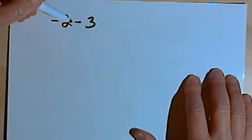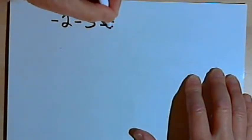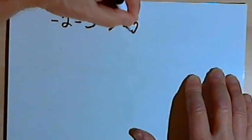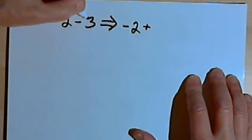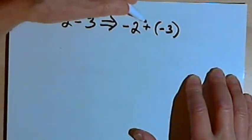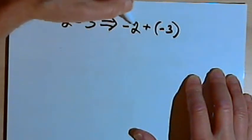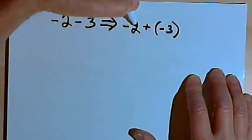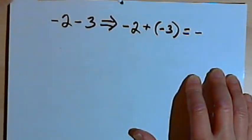Let's look at another problem: negative 2 minus 3. I'll solve it by turning it into an addition problem. Starting with negative 2, instead of subtracting I'll add, so it becomes negative 2 plus negative 3. I've used the opposite of subtraction, which is addition, and the opposite of positive 3, which is negative 3. When both signs are the same, the answer carries that sign — so the answer is negative, and 2 plus 3 gives negative 5.